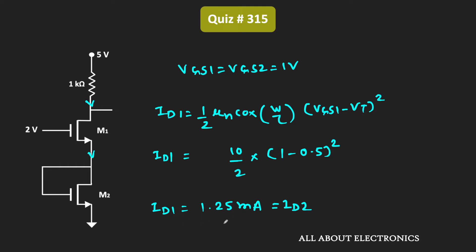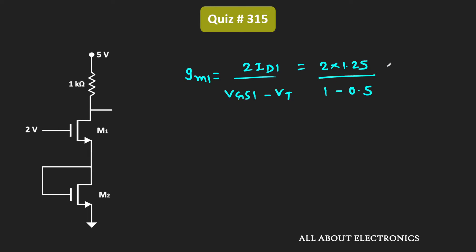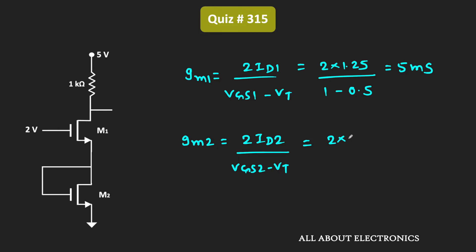Once we know the drain current, we can easily find the transconductance. The transconductance Gm = 2·Id / (VGS − Vt). For MOSFET M1, Gm1 = 2 × 1.25 / (1V − 0.5V) = 5 millisiemens. Since both MOSFETs are identical, Gm1 = Gm2 = 5 mS.